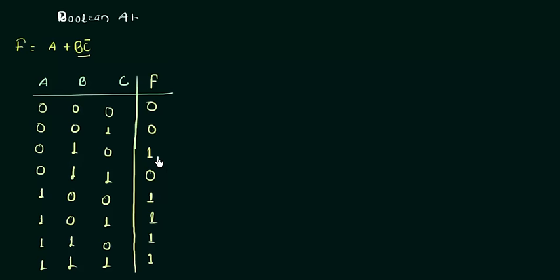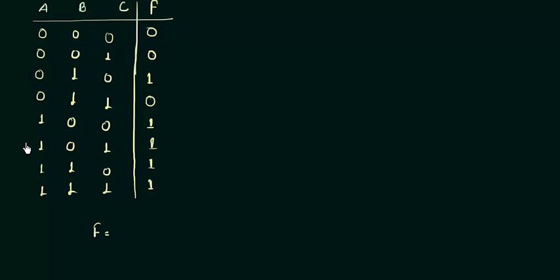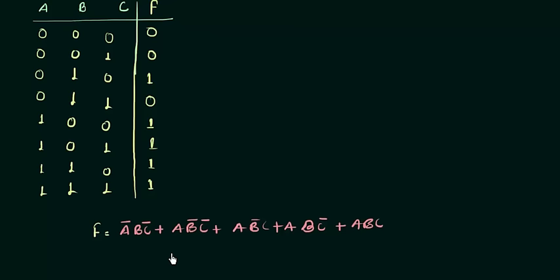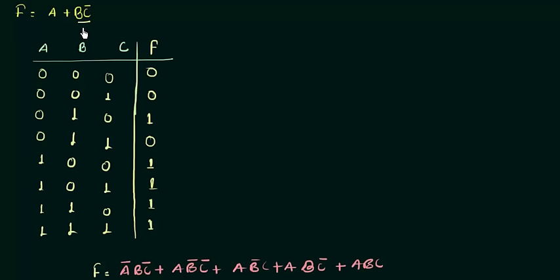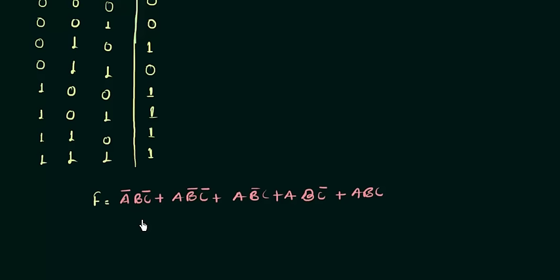Now we can form the canonical Sum of Products from this truth table. We look at the values where f is one: f = ā·b·c̄ + a·b̄·c̄ + a·b̄·c + a·b·c̄ + a·b·c. This is the canonical Sum of Products, and by using Boolean algebra we can minimize it to get the function a OR bc̄. You can see it is very laborious to minimize this large function to the simpler form we started with.